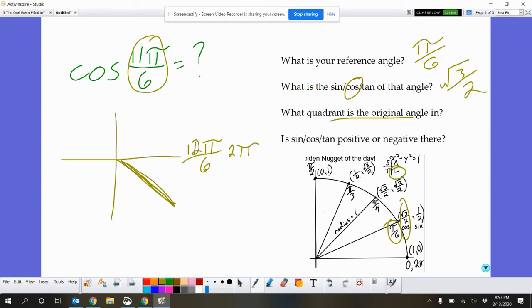And this quadrant, cosine is the only thing that's positive. So I'm going to keep that square root of 3 over 2 positive this time. I'm not going to swap it to negative. So the cosine of 11 pi over 6 is the square root of 3 over 2.